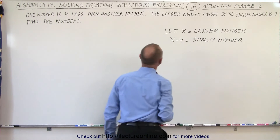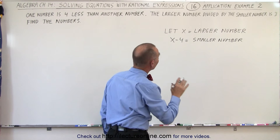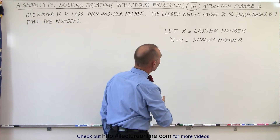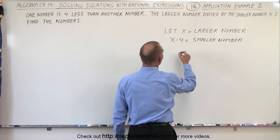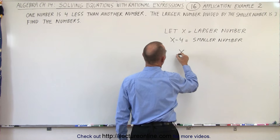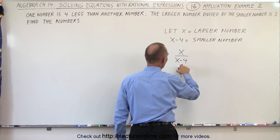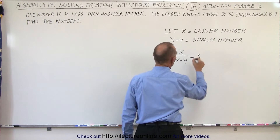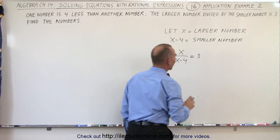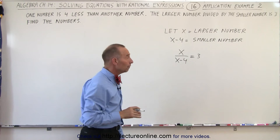And then it tells us that the larger number divided by the smaller number is equal to 3. Which means that x divided by x minus 4, the larger number divided by the smaller number, equals 3. And now we're ready to solve this problem.